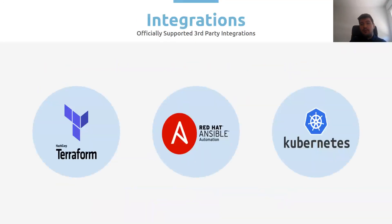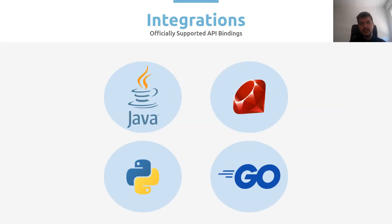I'd also like to review the different integrations with third-party tools that we have at the moment. Currently, we have an OpenNebula provider for Terraform, which is officially supported and can be found in the official Terraform registry. We also have support for Ansible modules, which allow you to use Ansible for deploying OpenNebula resources. We are also officially integrated with Kubernetes, so using OpenNebula you can automatically deploy your Kubernetes cluster within it. If you need to integrate OpenNebula with any other custom system, we provide API bindings for Java, Ruby, Python, and Go, which allow you to interact with OpenNebula and integrate it with any third-party system.